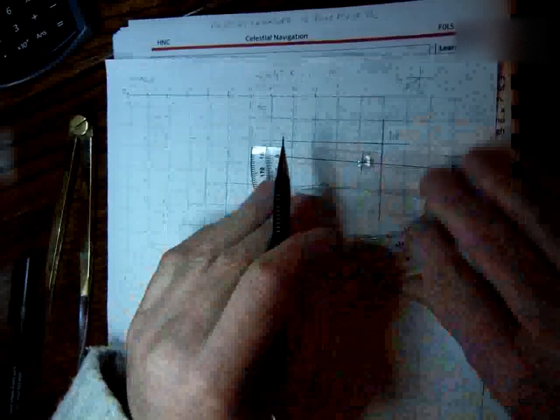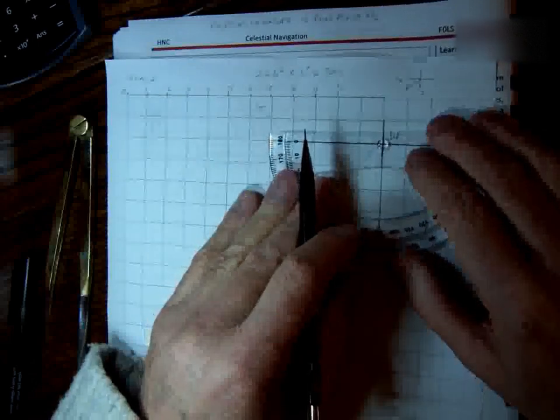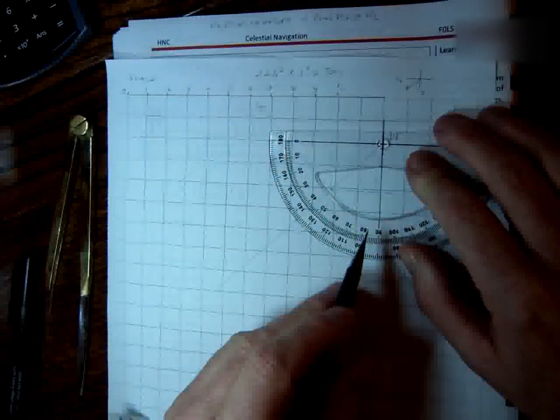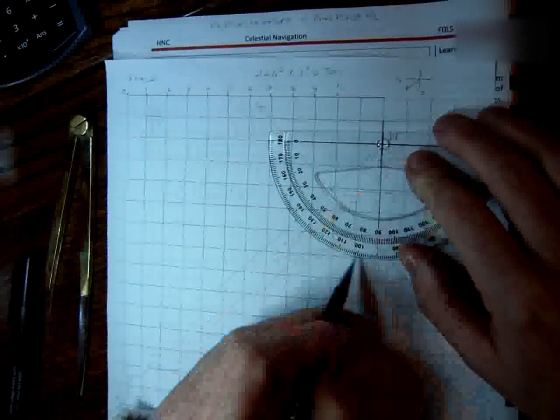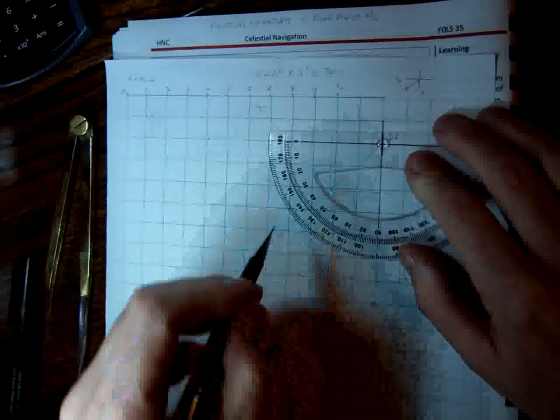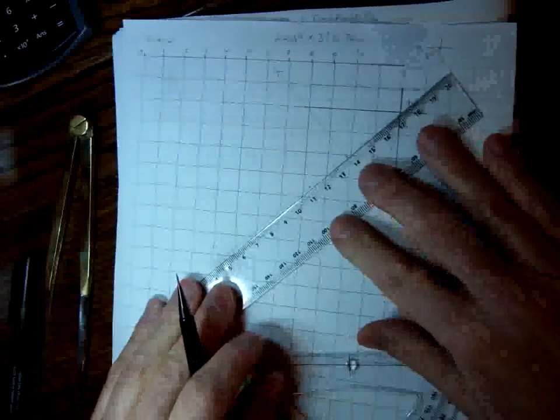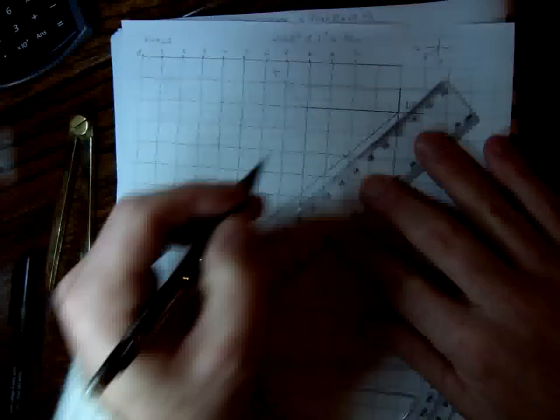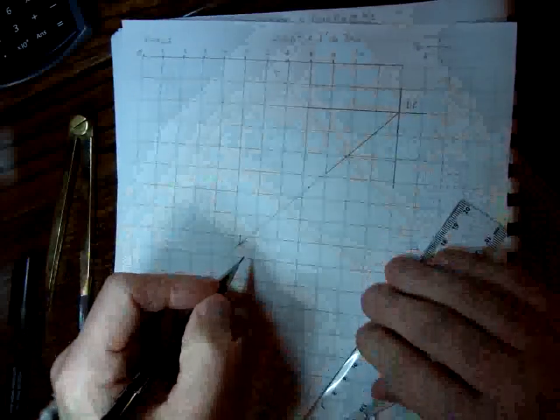So what I do, I draw my DR position. Then I'll get a protractor, and I'll place it over the top of the DR position, and measure from the southerly position there, right round to 226 degrees. Now I would mark that off, and then with my pencil, you're always better using pencil in case you need to rub it out, I would draw the bearing of 226 degrees. So that's the bearing down there at 226 degrees.